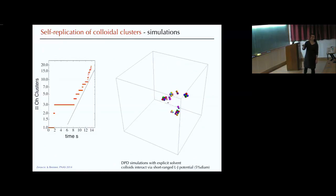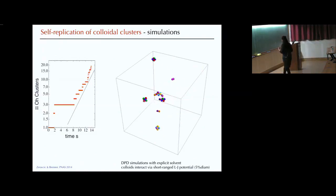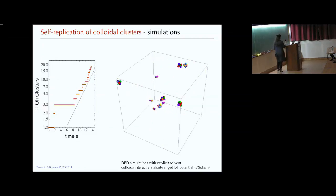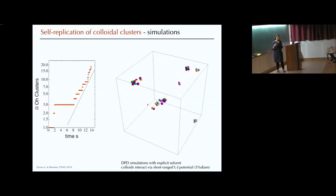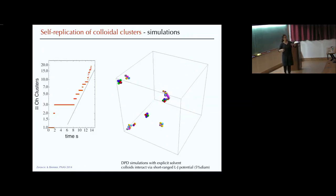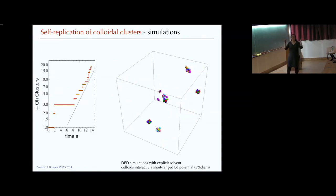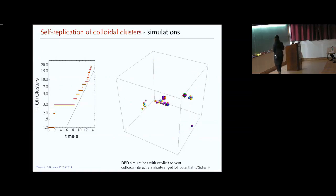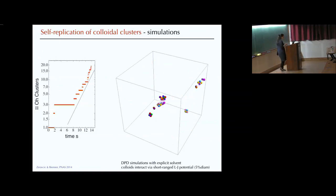You can imagine it just progresses until basically there is no more food left. These are all canonical ensemble simulations — we put in some number of colloids and the simulation stops when there are no more free particles around.